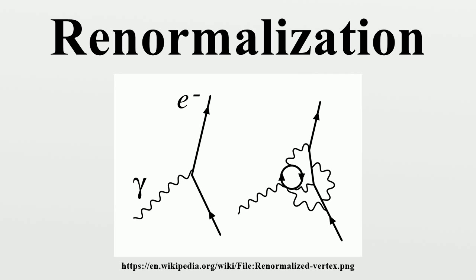Since the quantity infinity minus infinity is ill-defined, in order to make the notion of cancelling divergences precise, the divergences first have to be tamed mathematically using the theory of limits, in a process known as regularization. An essentially arbitrary modification to the loop integrands, called a regulator, can make them drop off faster at high energies and momenta such that the integrals converge. A regulator has a characteristic energy scale known as the cutoff. Taking this cutoff to infinity recovers the original integrals. With the regulator in place and a finite value for the cutoff, divergent terms in the integrals turn into finite but cutoff-dependent terms.